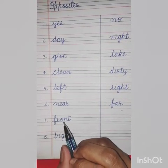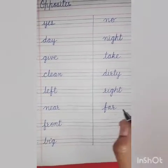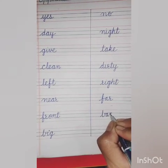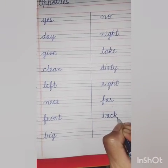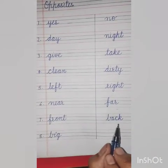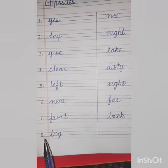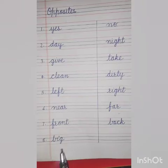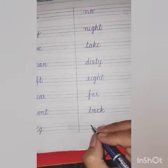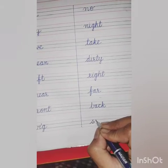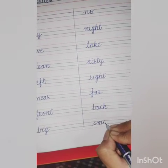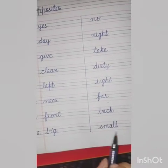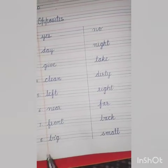Number seven: Front — F-R-O-N-T. Opposite of front. Yes — B-A-C-K, Back. Front, Back. Number eight: Big — B-I-G. Opposite of big — Small — S-M-A-L-L. Big, Small.